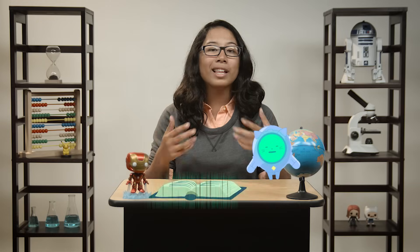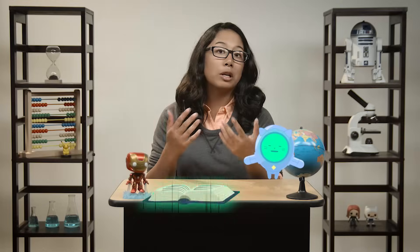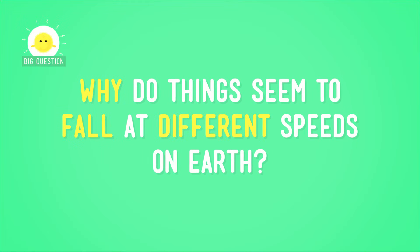But objects fall differently, right? Like, when I knock a piece of paper off my desk, it takes a lot longer to fall to the ground than if I knock a book off my desk. So what's up with that? Why do things seem to fall at different speeds on Earth?